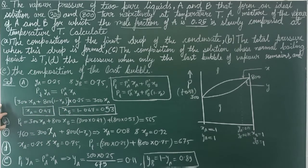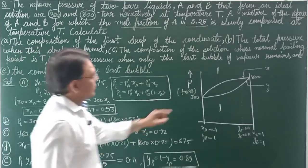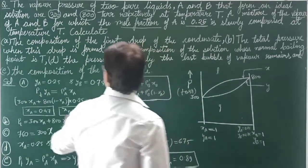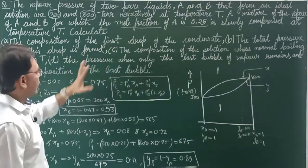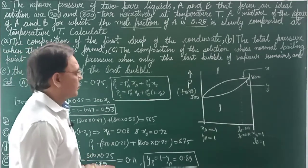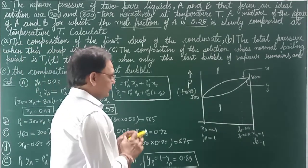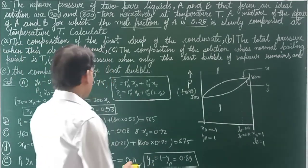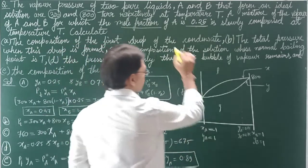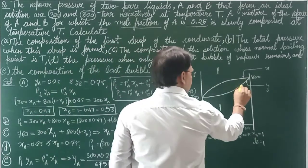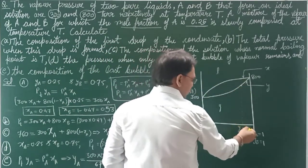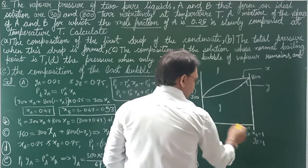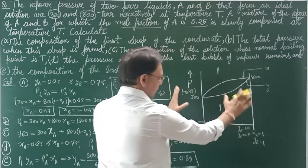Now comes part B. Part B asks: what is the total pressure when this drop is found — i.e., when the first drop of condensate forms, what is the total pressure? For part A the given data was y_A = 0.25 and y_B = 0.75.